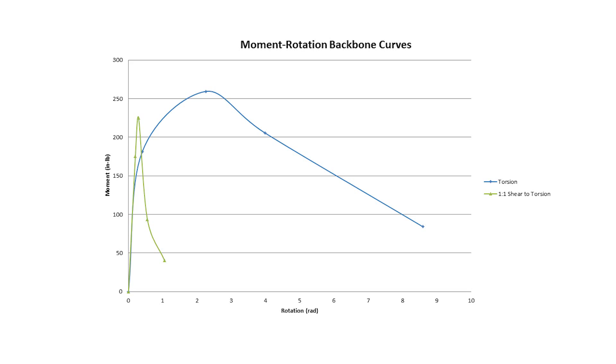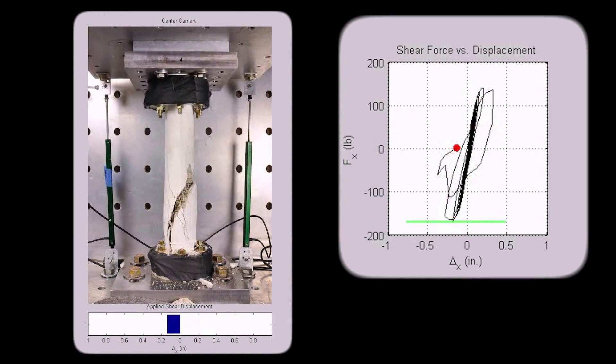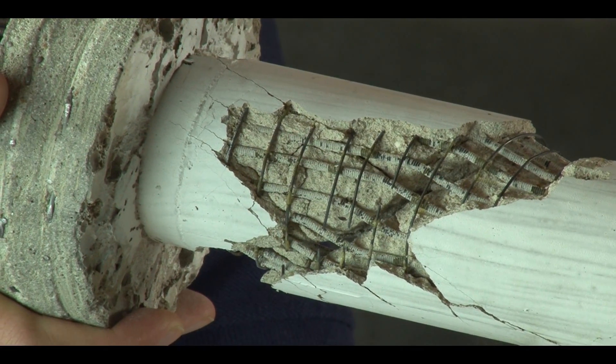This test involved a highly brittle failure, which is shown by a very sharp drop in load-carrying capacity of the specimen and was accompanied by the rupturing of several strands of transverse reinforcement.